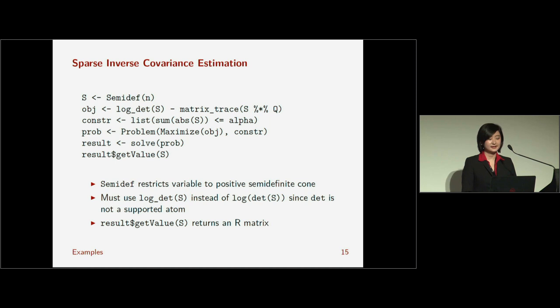So, here is, again, the code is very simple in CVXR. So, my first line, I define S, and now I'm using the semi-def constructor because I'm saying that S must be in a positive semi-definite cone. My second line is the objective function. Now, I've used two of CVXR's atoms, log det to represent the log determinant, and a matrix trace to represent the trace of S times Q. You could also replace matrix trace with sum of the diag of S times Q. I'm just using the atoms that I have in CVXR because it's a little more convenient.